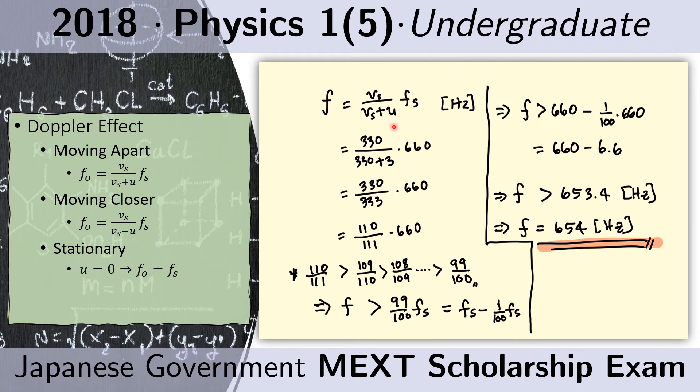We just substitute the value that we got. VS is 330, U is 3, and the source frequency is 660 hertz. Now, 330 over 333 can be reduced to 110 over 111 by canceling 3.